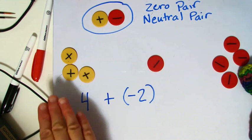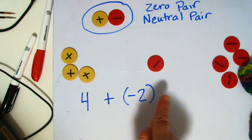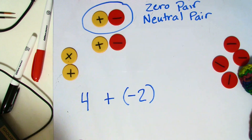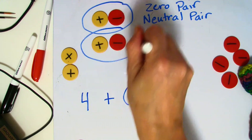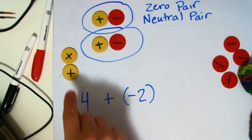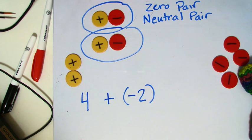So if I had, again, four plus a negative two, I would have two of these pairs that would basically cancel each other out. And what's left is going to be two positives.